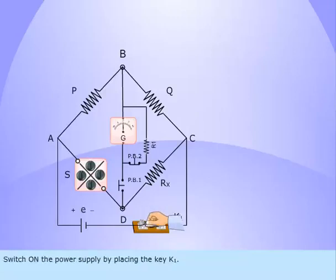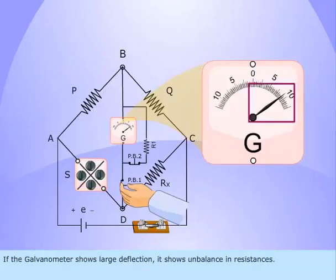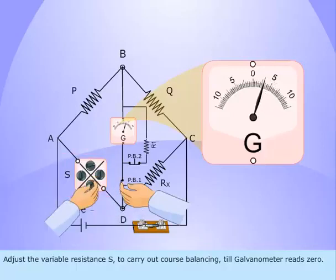Switch on the power supply by placing the key K1. Press the PB1. If the galvanometer shows large deflection, it shows unbalance in resistances. Adjust the variable resistance S to carry out coarse balancing till galvanometer reads 0.